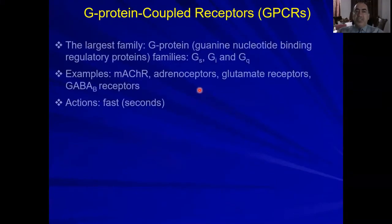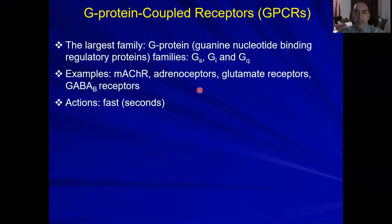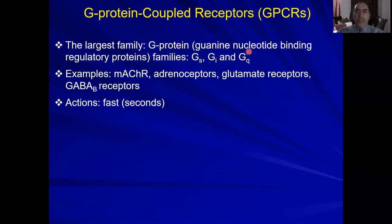The largest family of receptors is G-protein coupled receptors — receptors that are coupled to G-proteins. They are called G-proteins because they bind guanine nucleotides: GDP (guanosine diphosphate) and GTP (guanosine triphosphate). The G-protein families include Gs, Gi, and Gq, as we will discuss later.